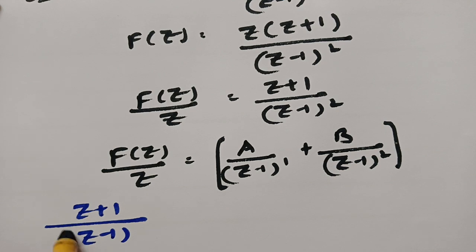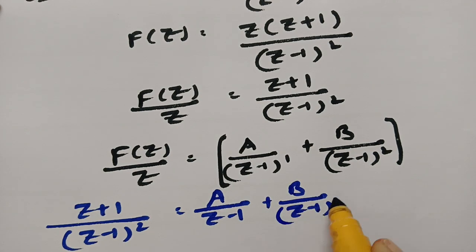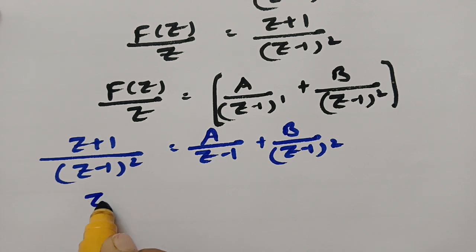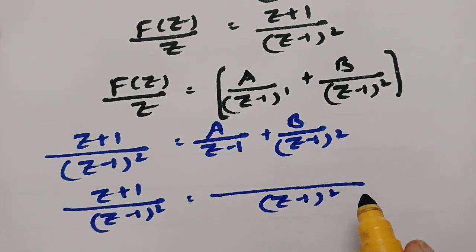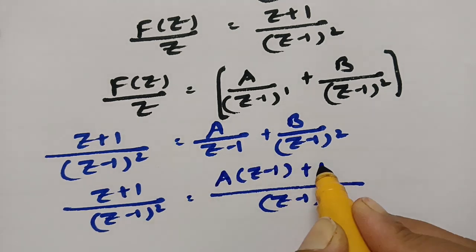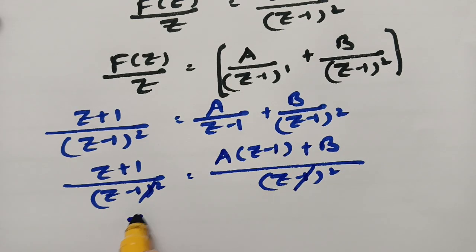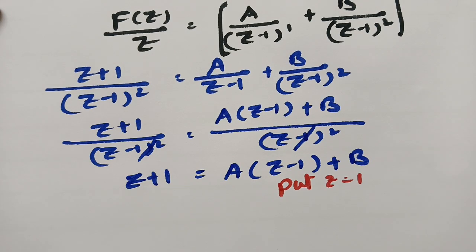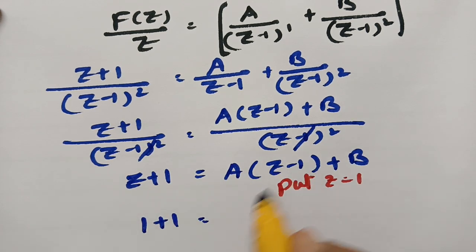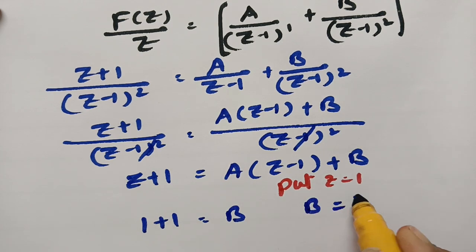So (Z + 1) / (Z - 1)² equals A / (Z - 1) + B / (Z - 1)². Taking LCM as (Z - 1)² and cancelling, we get Z + 1 = A(Z - 1) + B. In order to find the values of A and B, I put Z equal to 1. When Z = 1, the A term becomes 0, so we get 1 + 1 = B, therefore B is equal to 2.